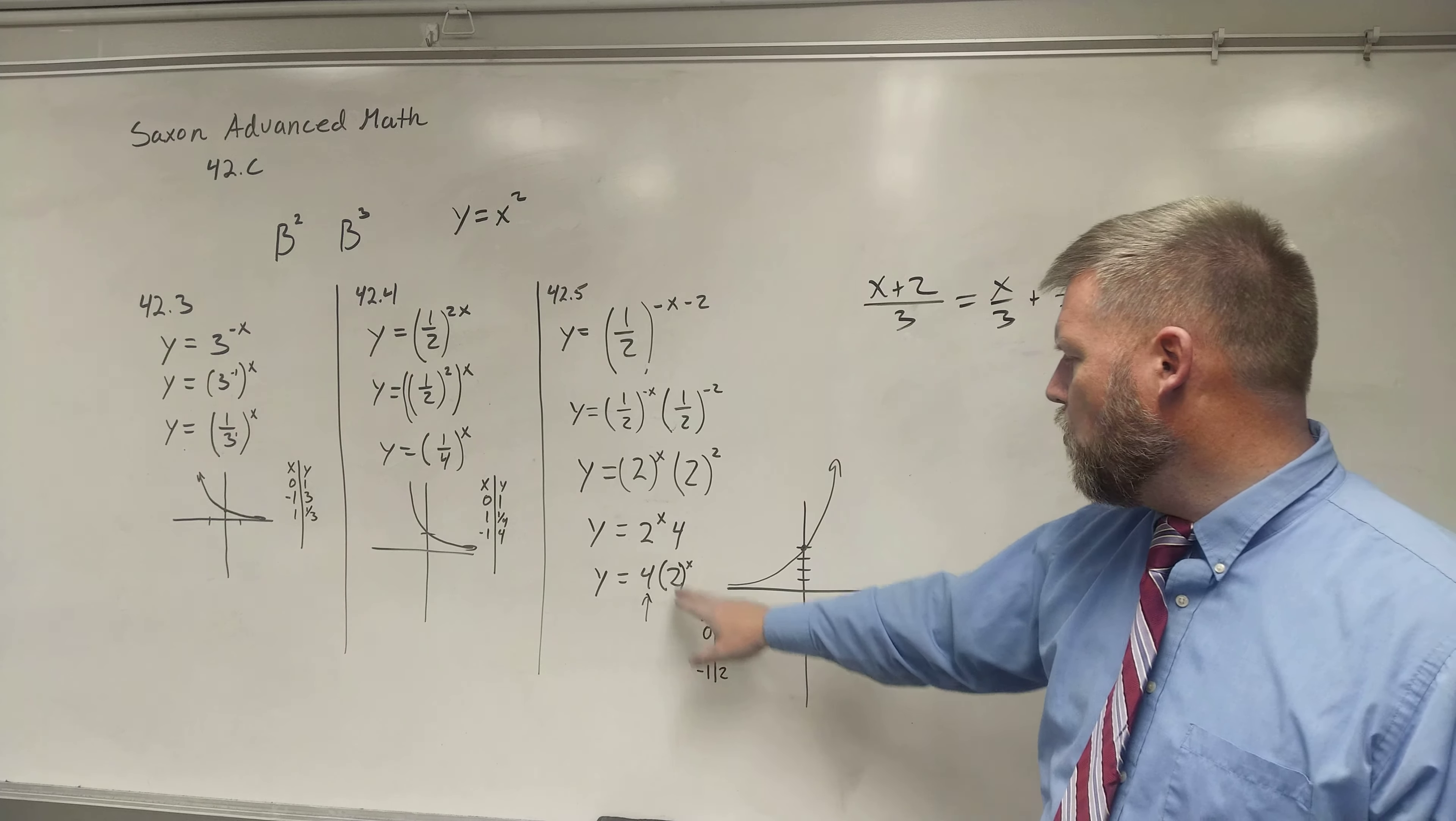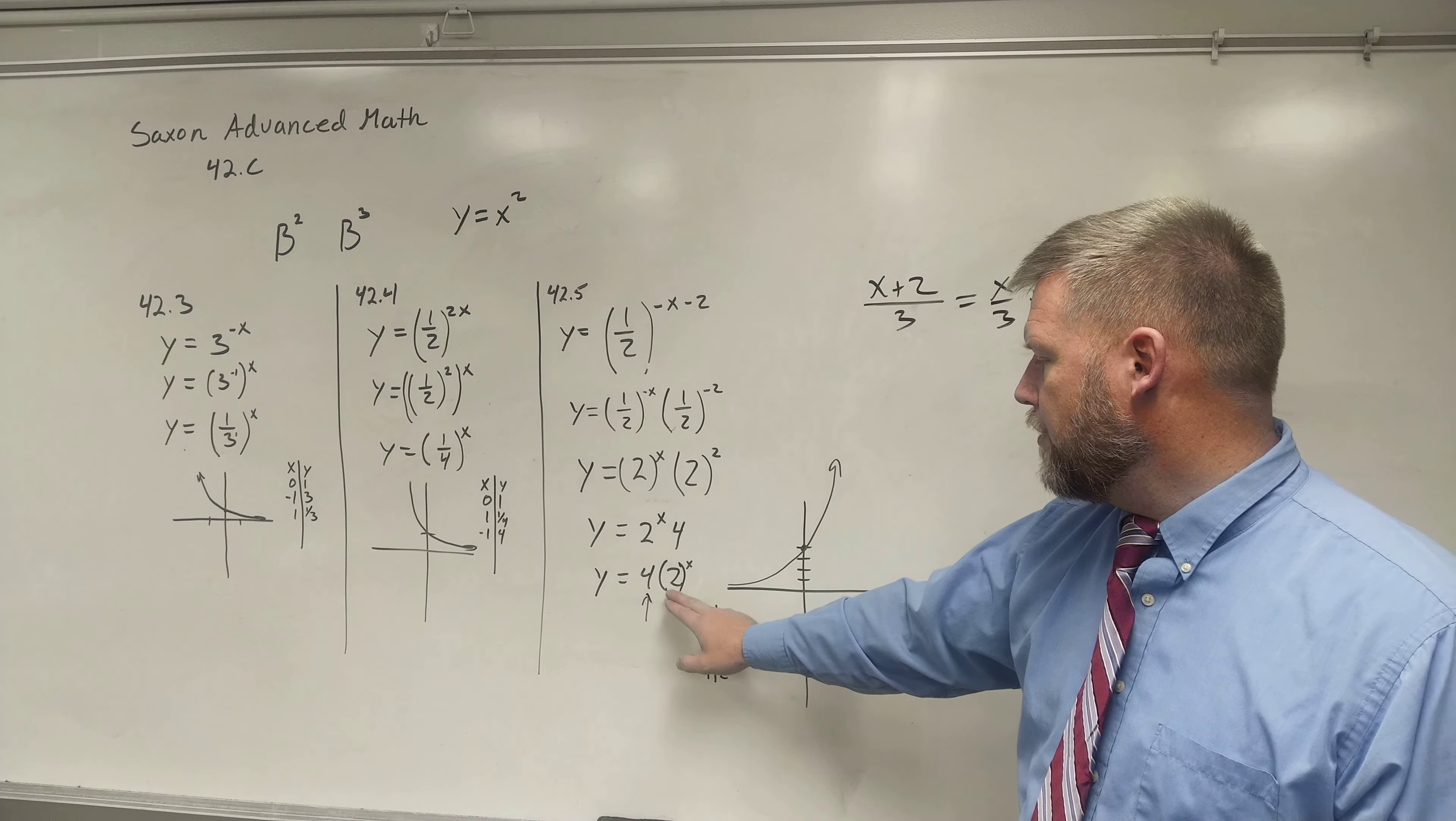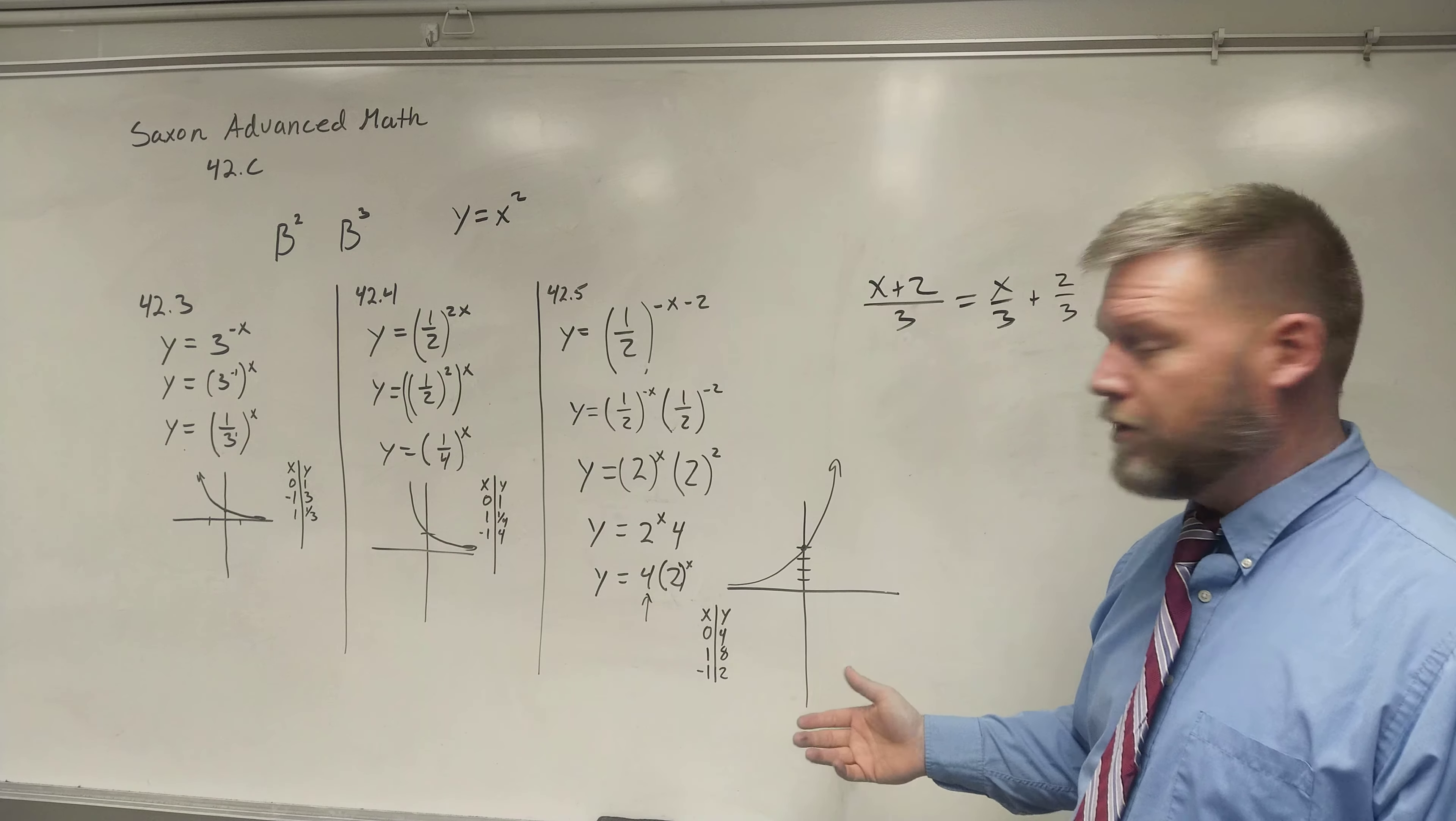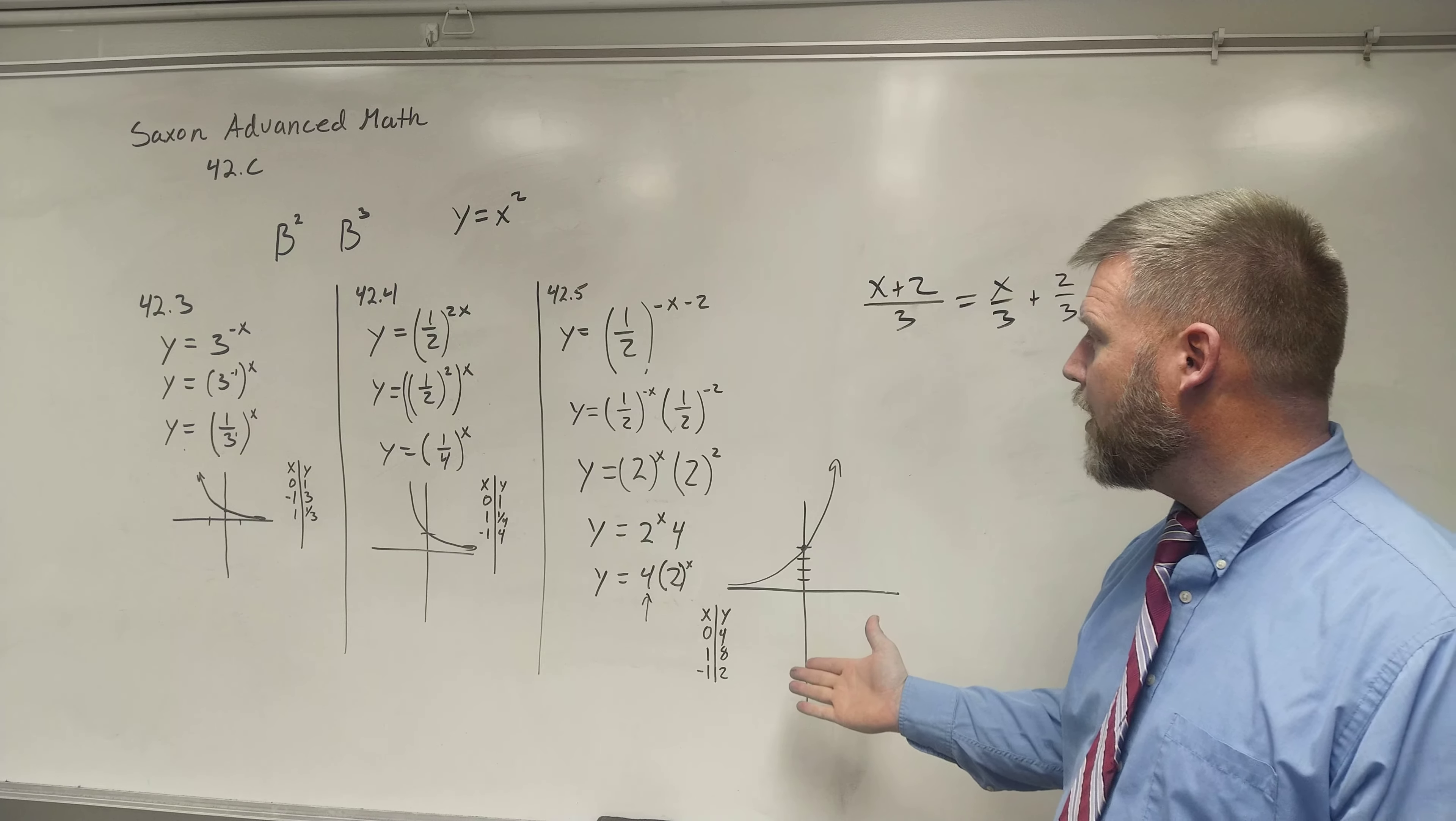And if I plot some of these points, notice I say 1, well, 2 to the 1 power is 2 times 4 is 8. And that's going to be, if I come over 1, it's all the way up here at 8. And then I look at a negative 1, and 2 to the negative 1 power is 1 over 2. 1 over 2 times 4, or 1/2 of 4 is going to be 2. And so if I come back 1, it's up at 2. Of course, these are sketches. These are not perfect graphs. But this is going to be exponential growth, and it is going to have a different y-intercept.